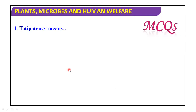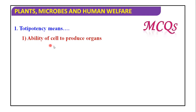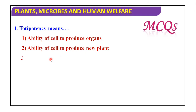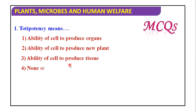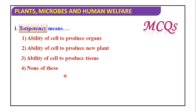Now the MCQ related to the tissue culture technique topic. First: totipotency means — ability of the cell to produce organs; ability of the cell to produce new plants; ability of the cell to produce tissue; none of these. The answer is: ability of cell to produce new plants.